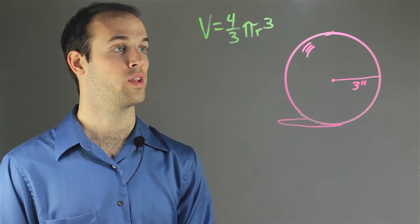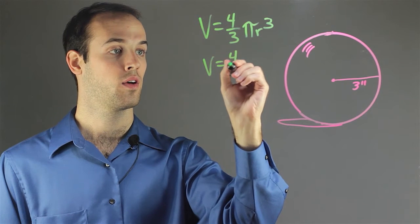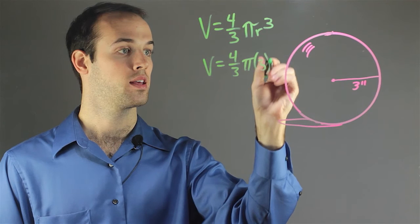So the only unknown that I have to plug in for is r, which is the radius. So I'm going to plug that in: 4 thirds pi 3 cubed.